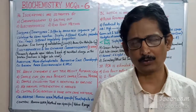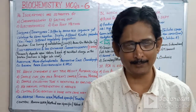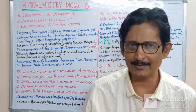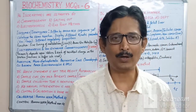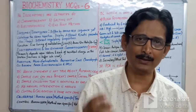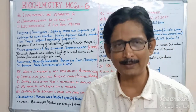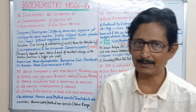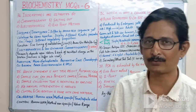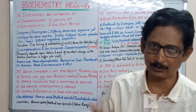Welcome again to this new episode about MCQs in biochemistry — episode number six — where we are trying to understand the questions and the appropriate answers from the multiple choices. Question 34 asks about isozymes, which are separated by techniques: chromatography, electrophoresis, salting out, or endpoint method.